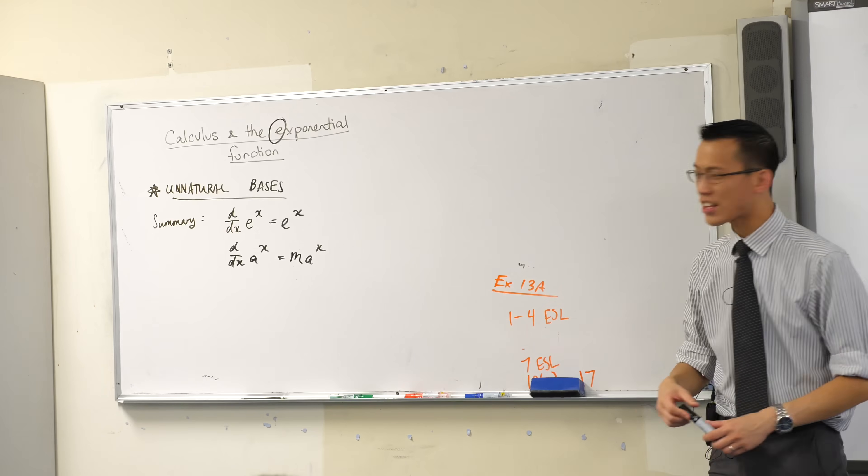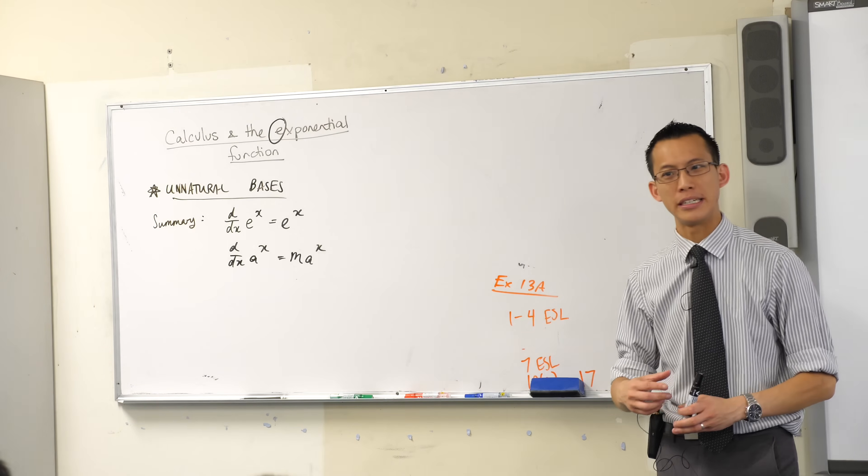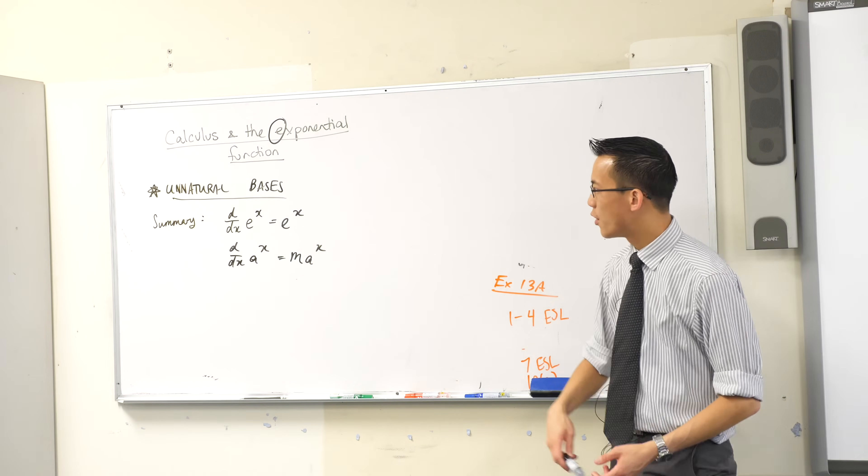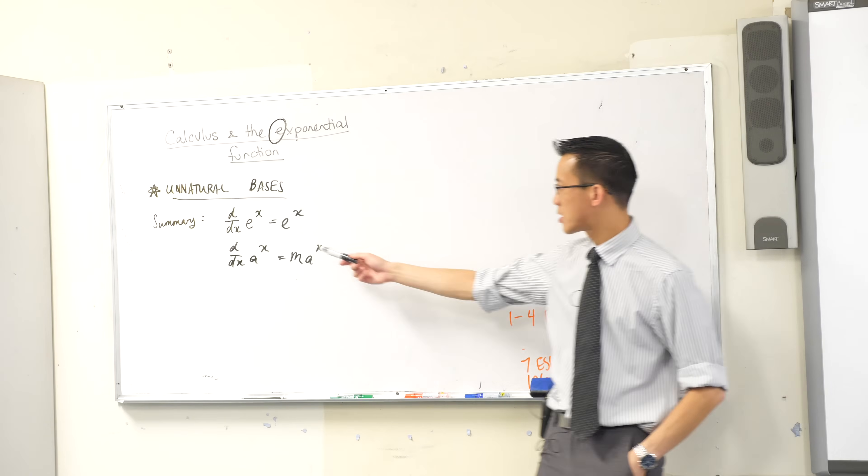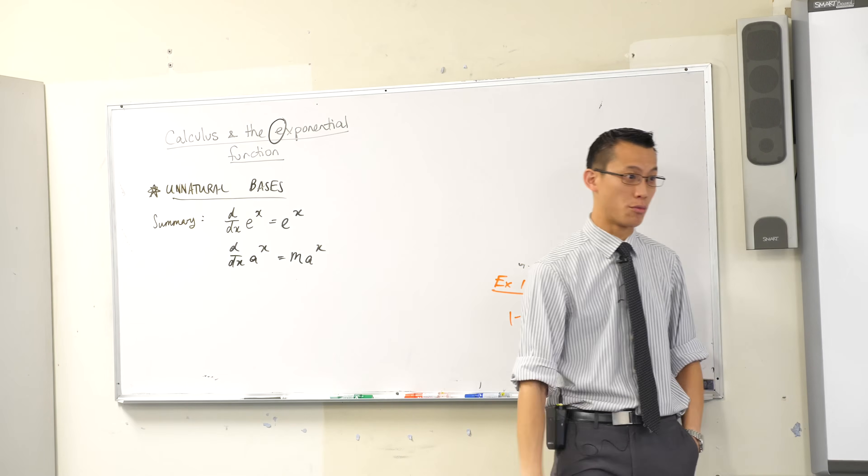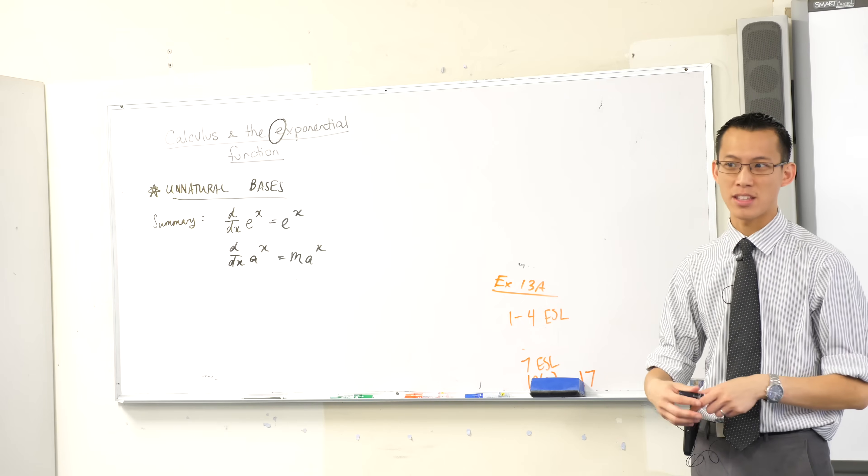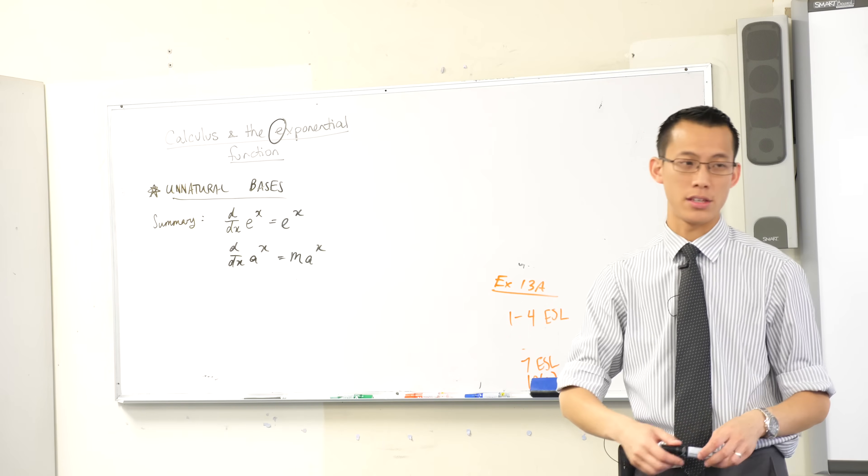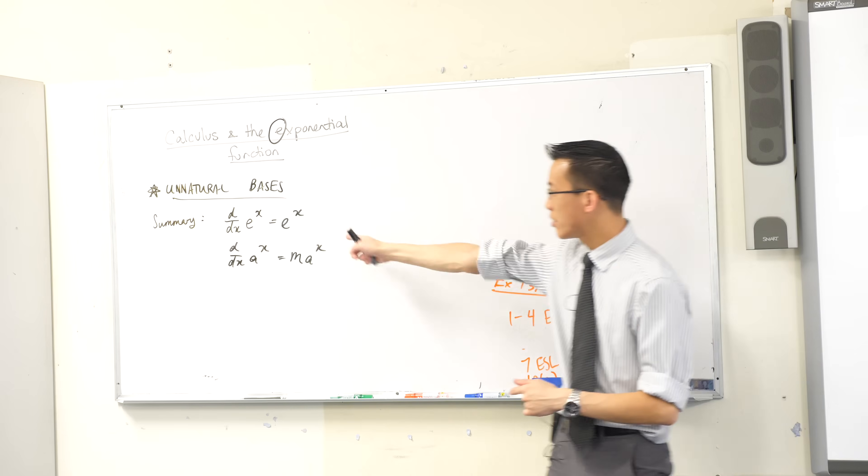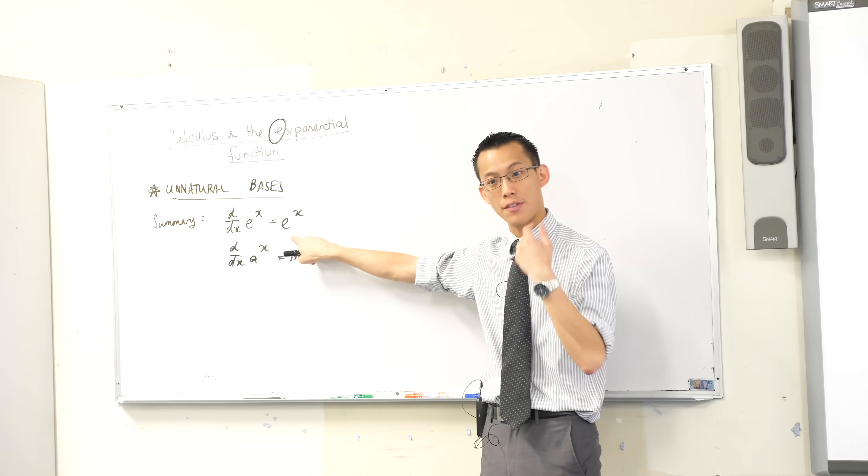So it's like the exponential you started with, but not quite. Now, for this reason, this base e is called the natural base. It's the one where all the interesting calculus happens. And that's why when you look at logs, which we're going to come to later this week, in exactly the same way, we focus on this base of e.